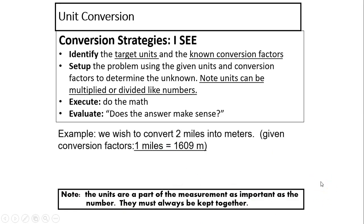For example, we wish to convert two miles into meters. Given conversion factor: one mile equals 1609 meters. This conversion factor means two things: 1609 meters divided by one mile equals one, or one mile divided by 1609 meters equals one.